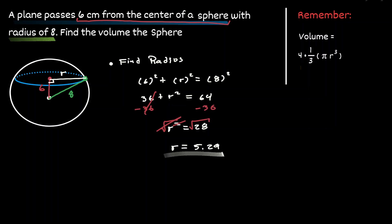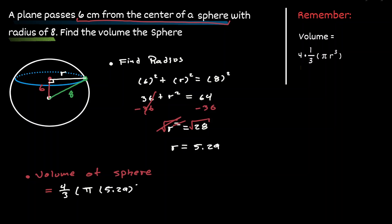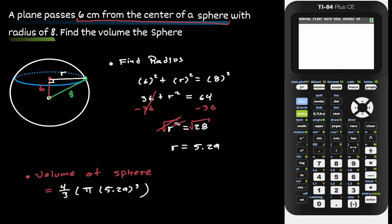So now that we know the value of the radius, we can just plug it into our volume formula to obtain the volume of the sphere. We'll have 4 divided by 3 times pi times the radius cubed, where the radius is equal to 5.29 to the third. Using a calculator, we can say that the volume of the sphere is approximately 620.09 centimeters cubed.